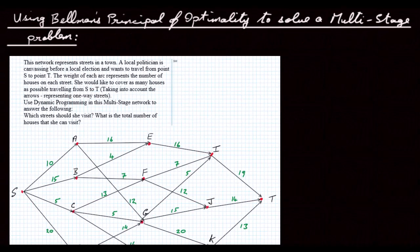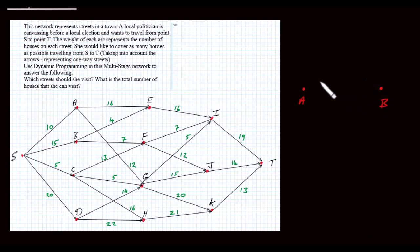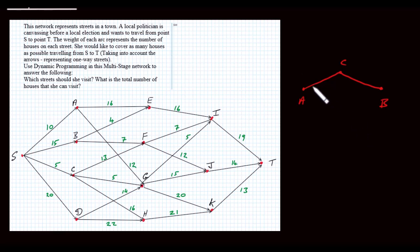In this video I'm going to look at using Bellman's Principle of Optimality to solve a particular multi-stage problem. To explain simply what Bellman's Principle of Optimality is: let's say you have a point A and a point B, and there are various road networks between A and B. If you find that the quickest way of getting from A to B is by passing through C, then the optimal route from A to C will be that particular route, and the optimal route from C to B will be that particular route.